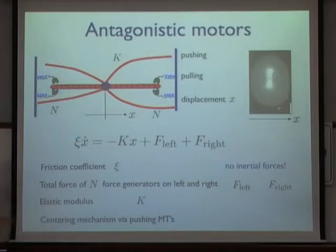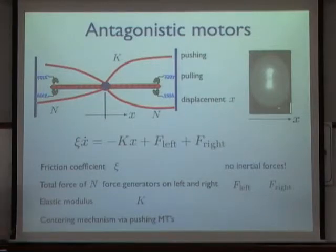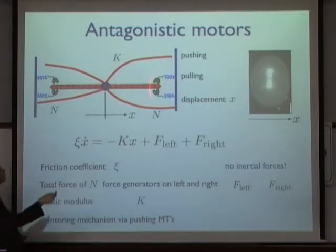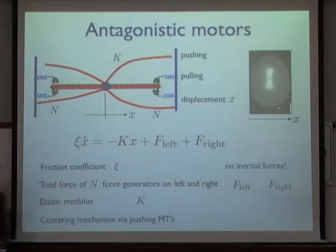We describe this by an equation for the position of the spindle pole. There is a restoring force characterized by an elastic coefficient resulting from the centering mechanism or microtubule buckling, some effective friction for moving the spindle pole through the cell, and the forces of the left and right populations of force generators that pull. This system is completely overdamped — inertial forces can be neglected compared to friction forces — so we have simple overdamped dynamics. The question is: where can oscillations arise in such a system?